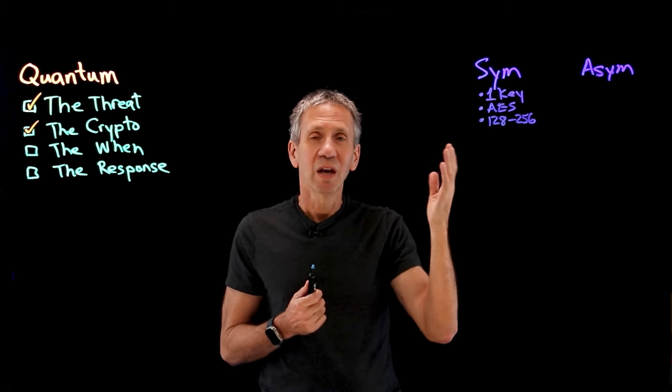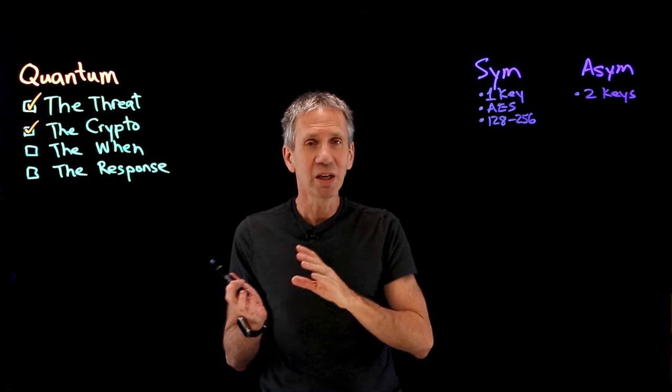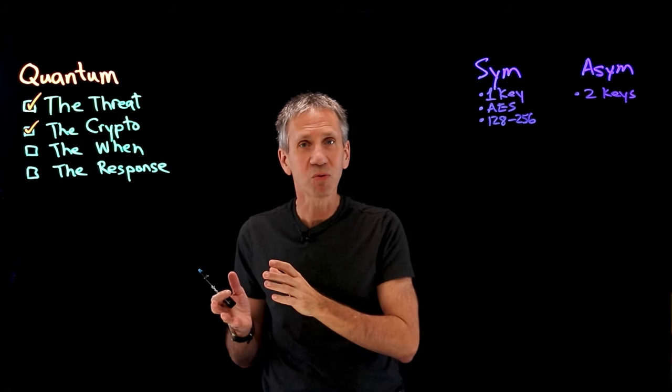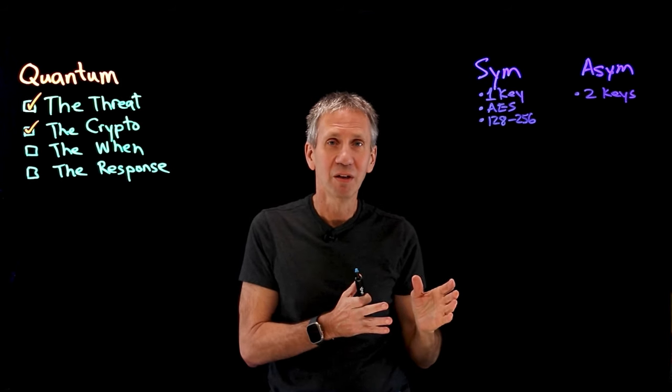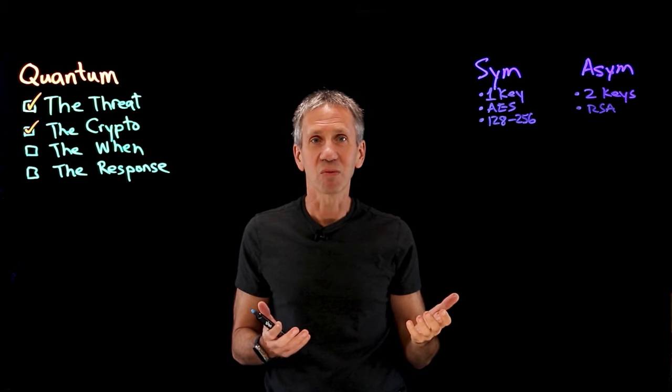Asymmetric is different. Asymmetric, we use two keys. One is a public key and one is a private key. So if I encrypt with one, I decrypt with the other. Most common example of this is the RSA algorithm.